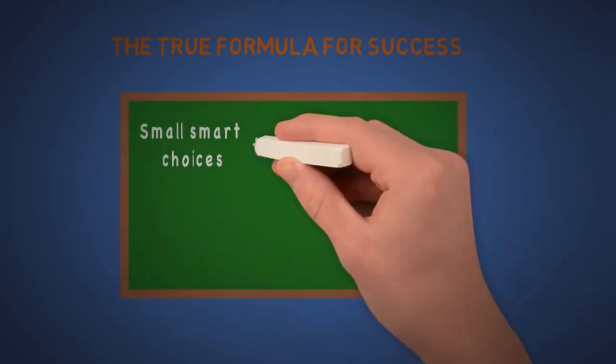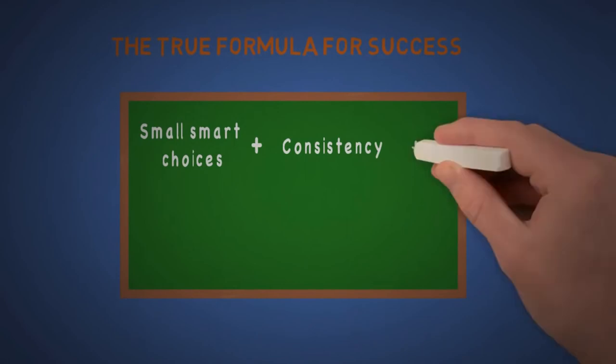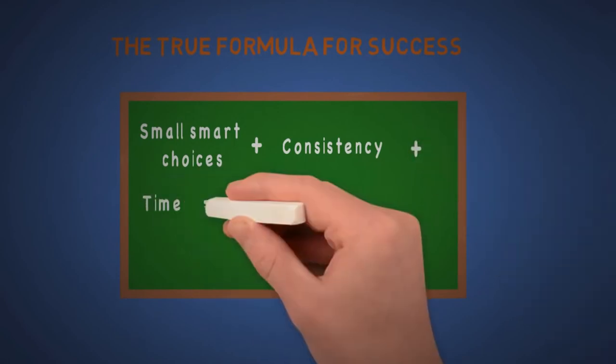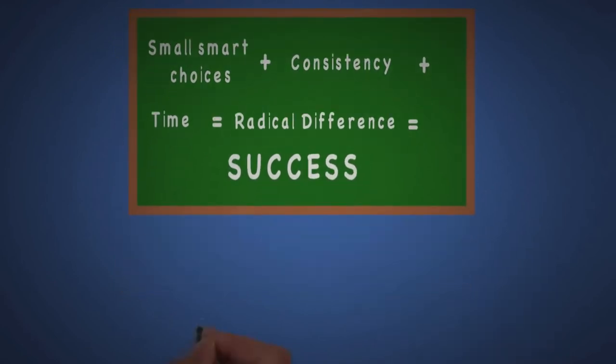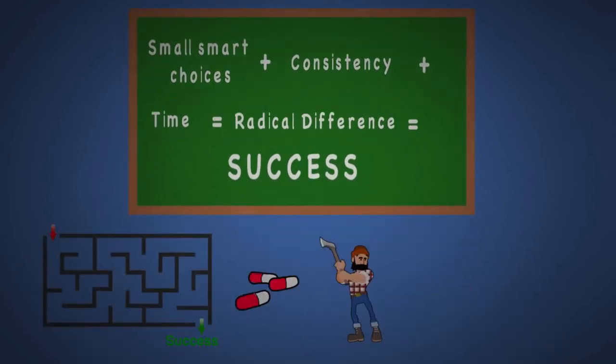Now for the true formula for success. It's really simple. Small, smart choices plus consistency plus time equal radical difference, equal success. Like I said, there are no shortcuts or magical pills for success. You just have to put in the work, time, and be consistent.